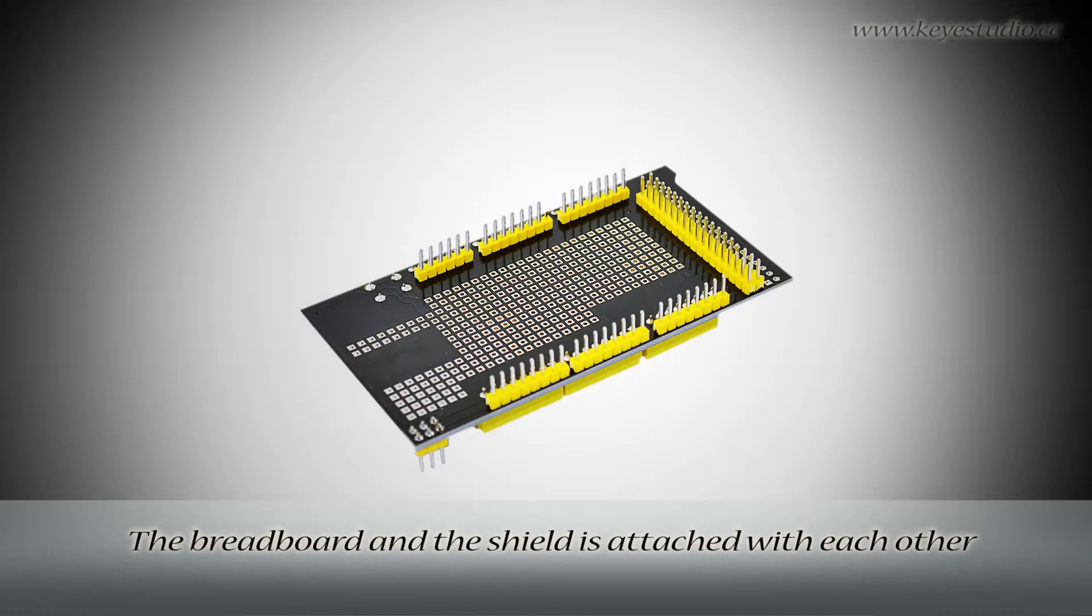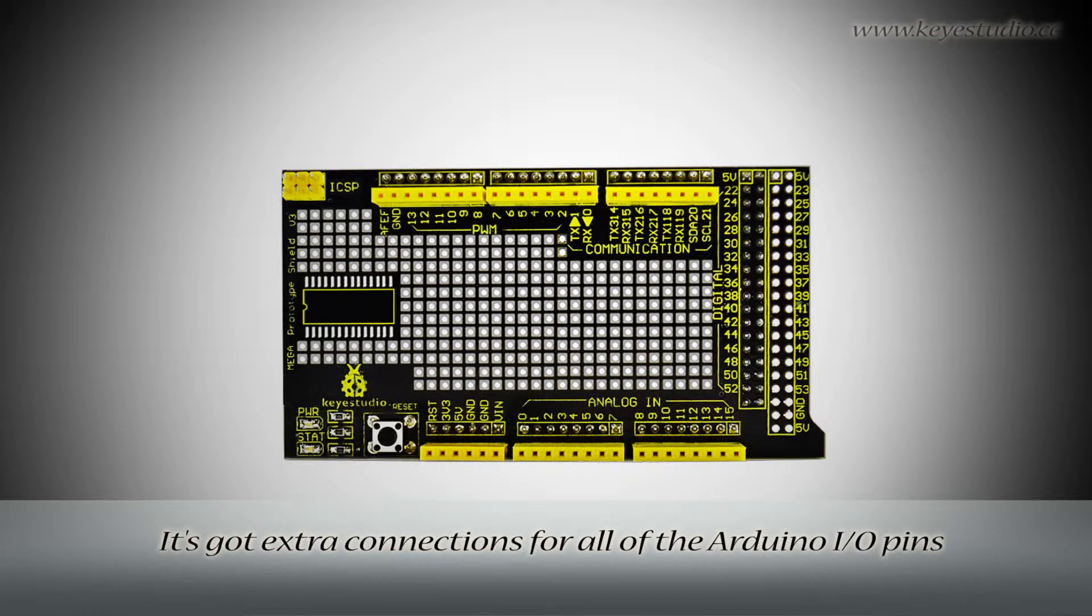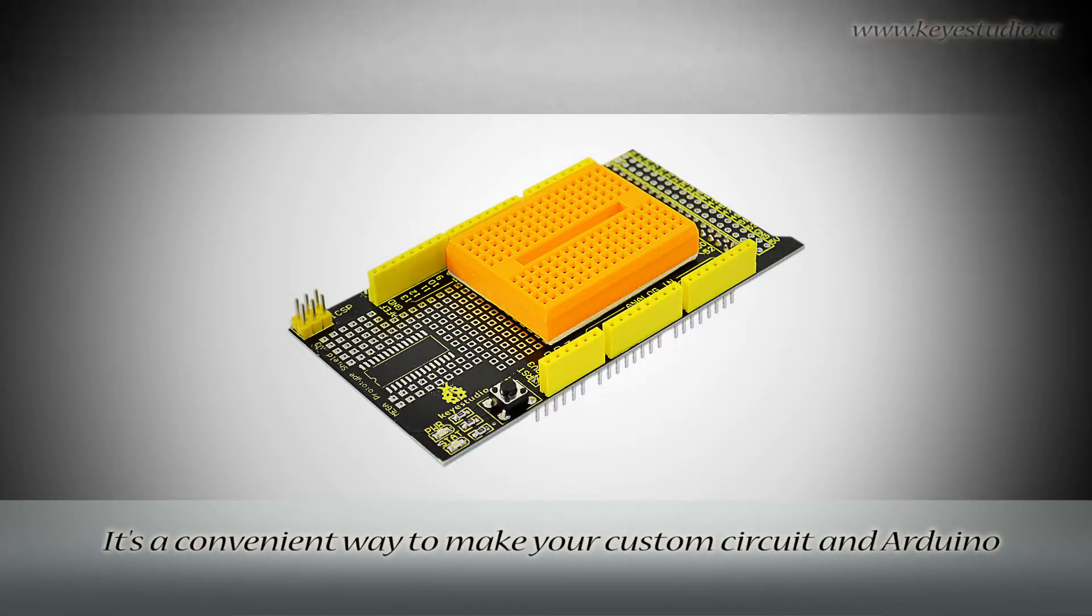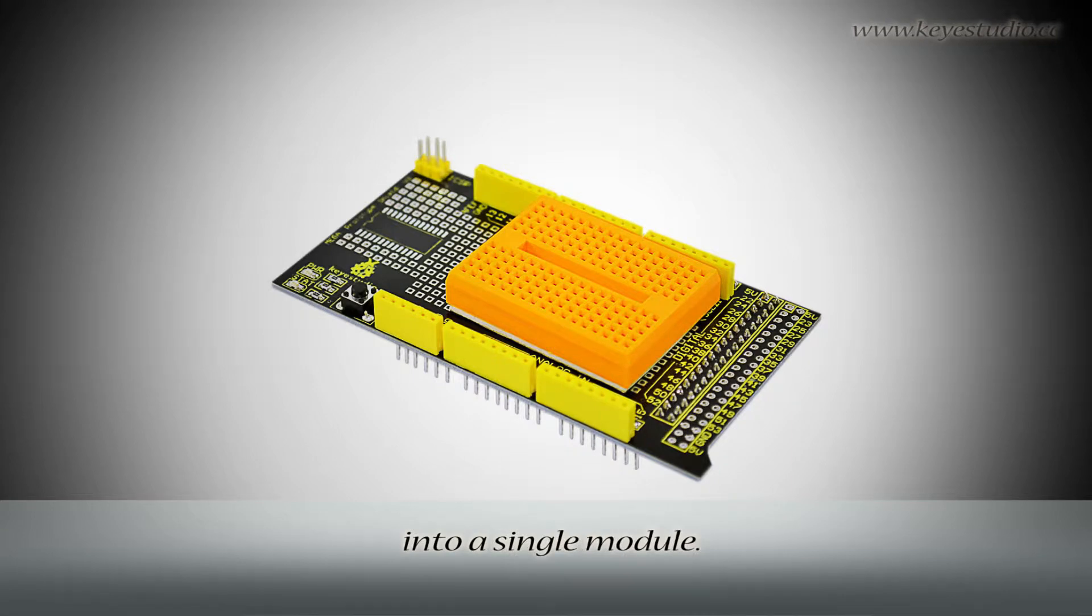The breadboard and the shield are attached with each other by double-faced adhesive tape. It's got extra connections for all of the Arduino I/O pins. It also comes with two built-in LEDs and two buttons. It is a convenient way to make your custom circuit and Arduino into a single module.